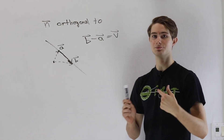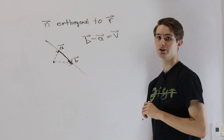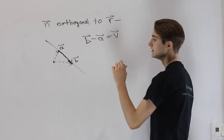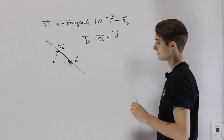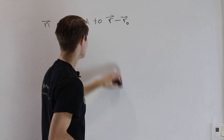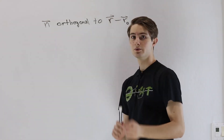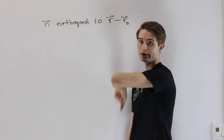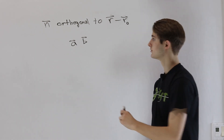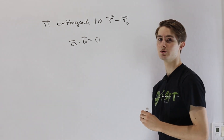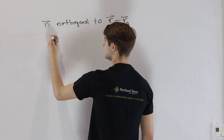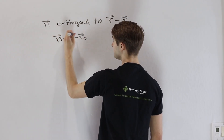Our goal is to find those points in the plane. Let's define points in the plane by a vector R. We need another reference point, which we'll call R-naught. So a vector in the plane is R minus R-naught. Notice that by defining R-naught as our other point in the plane, we've satisfied the second property of planes — they need both a normal vector and an initial point. Since N must be orthogonal to R minus R-naught, and two vectors are orthogonal when their dot product equals zero, we can write: N dotted with (R minus R-naught) equals zero.